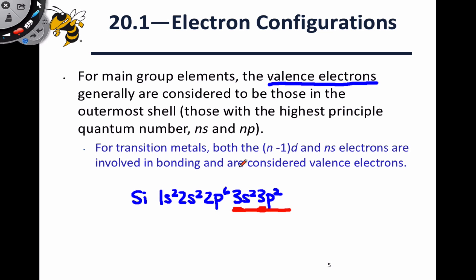In the transition metals, we consider as valence electrons both the n-1d electrons and the ns electrons. So we consider the s electrons in the outermost shell and the n-1d electrons, which are in the second most outer shell, but nonetheless still involved in bonding and still considered valence electrons.